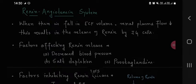Renin-angiotensin system. When there is a fall in ECF volume, renal plasma flow decreases. This results in the release of renin by JG cells.